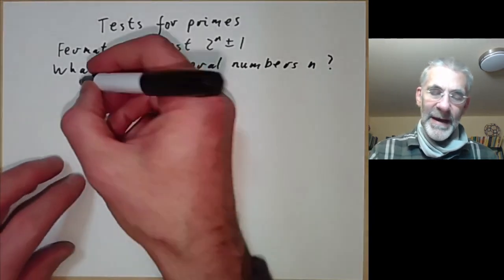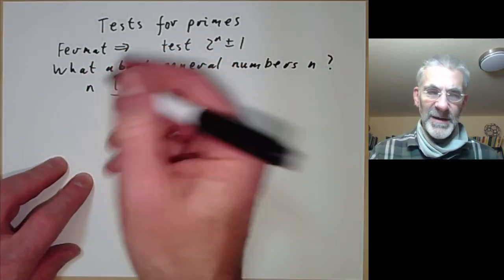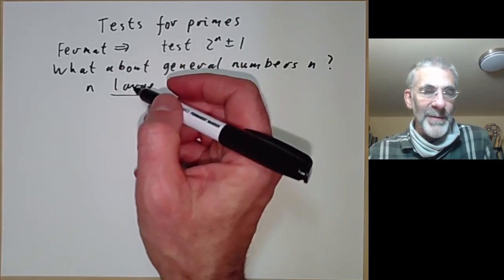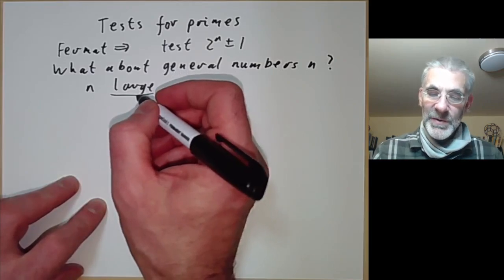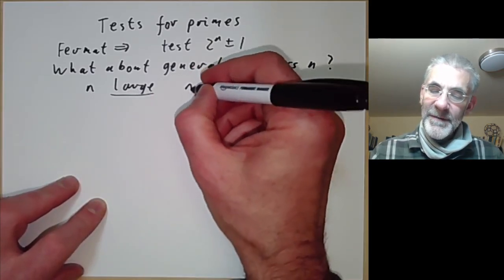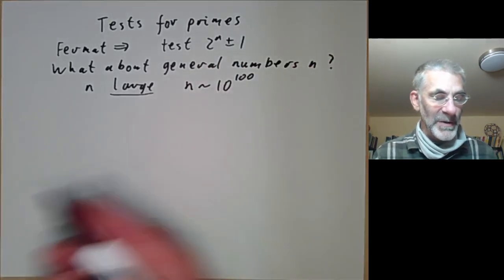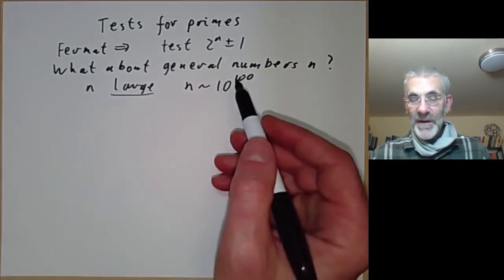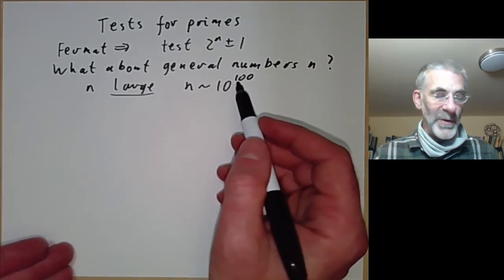And what we want to do is, we want to think of n as large. If n isn't large, we can just test to see whether it's prime by testing for divisibility by all numbers up to its square root. So we might think of n as being about 10 to the 100, with a hundred decimal digits. It would be completely impractical to test all prime factors up to the square root of n.